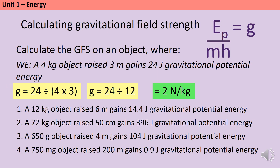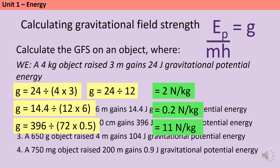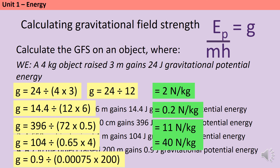Here are four more questions — remember to check units for mass and height and either use brackets or pre-calculate mass × height. Question one: 14.4 ÷ (12 × 6) = 14.4 ÷ 72 = 0.2 newtons per kilogram. Question two: height is 50 centimeters = 0.5 meters — answer is 11 newtons per kilogram. Question three: mass is 650 grams = 0.65 kilograms, so 104 ÷ (0.65 × 4) = 40 newtons per kilogram. Question four: convert mass from milligrams to kilograms by dividing by one million — answer is 6 newtons per kilogram.